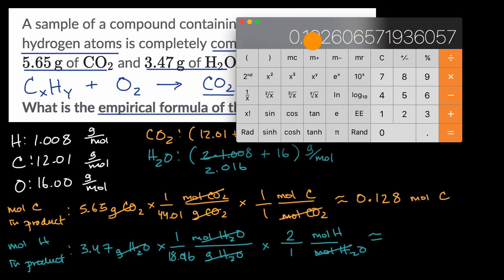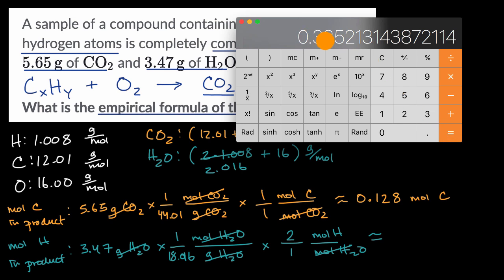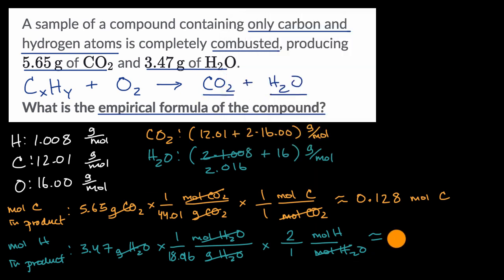That gives us moles of water in the product. Since each water molecule has two hydrogens, I multiply by two. So 3.47 divided by 18.016, times two, equals 0.385 moles of hydrogen.